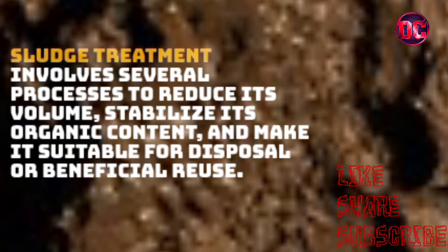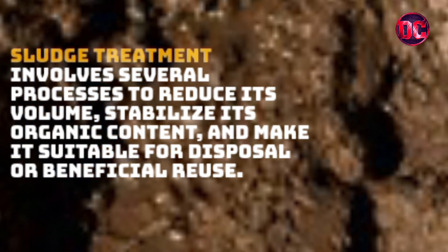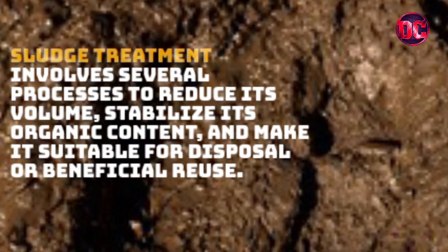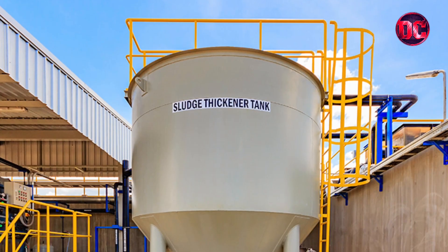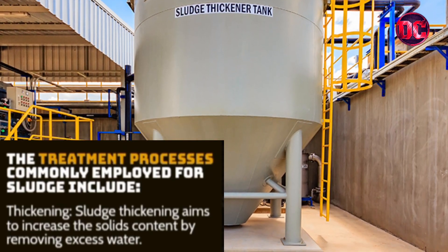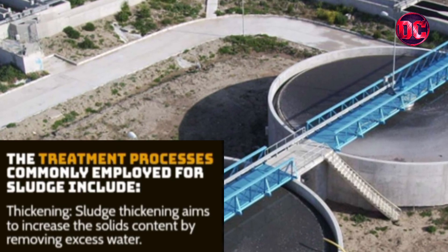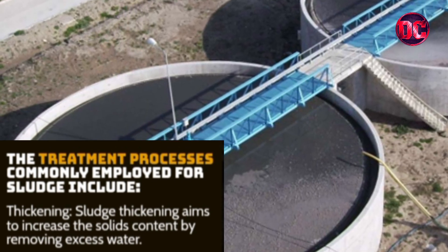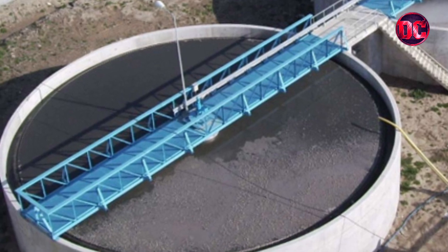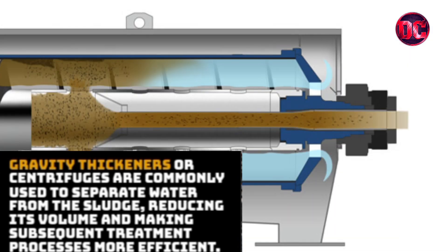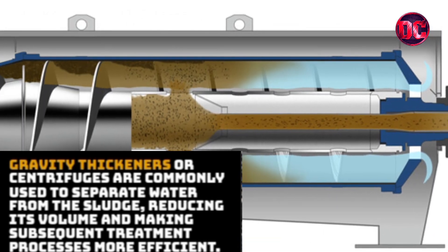Sludge treatment involves several processes to reduce its volume, stabilize its organic content and make it suitable for disposal or beneficial reuse. Thickening aims to increase the solids content by removing excess water. Gravity thickeners or centrifuges are commonly used to separate water from the sludge, reducing its volume and making subsequent treatment processes more efficient.